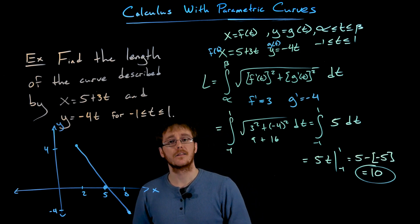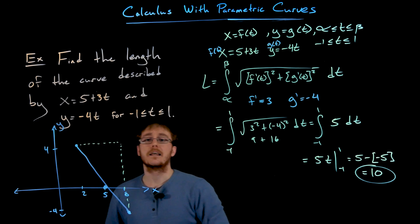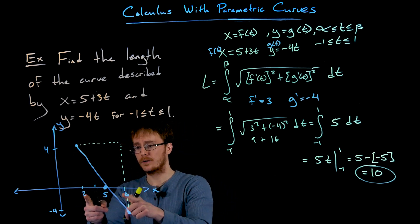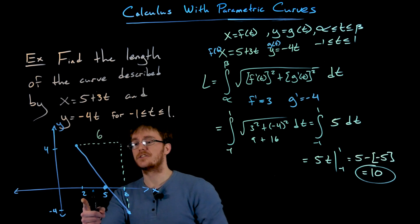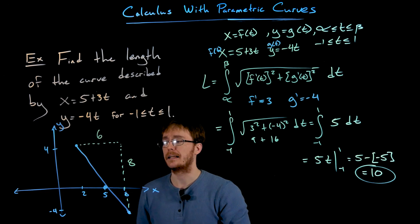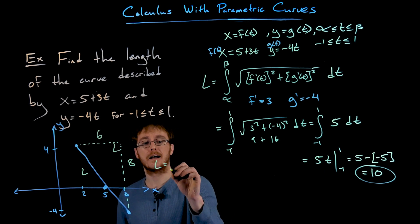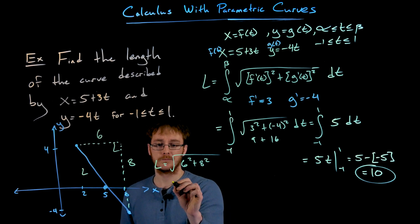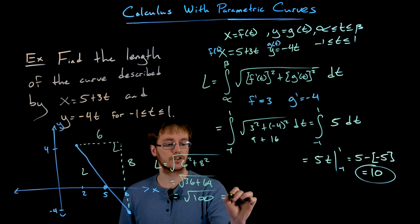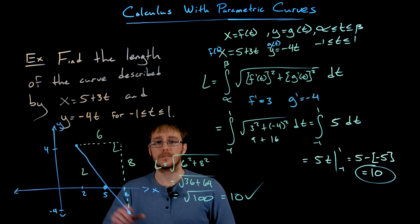We can also verify this using geometry. Introducing a right triangle, the width in X goes from 2 to 8, a length of 6, and the height in Y goes from negative 4 to positive 4, a height of 8. The hypotenuse — our arc length L — is the square root of 6 squared plus 8 squared, which is the square root of 36 plus 64, or the square root of 100, which equals 10. Geometry confirms our result: the line segment's length is exactly 10.